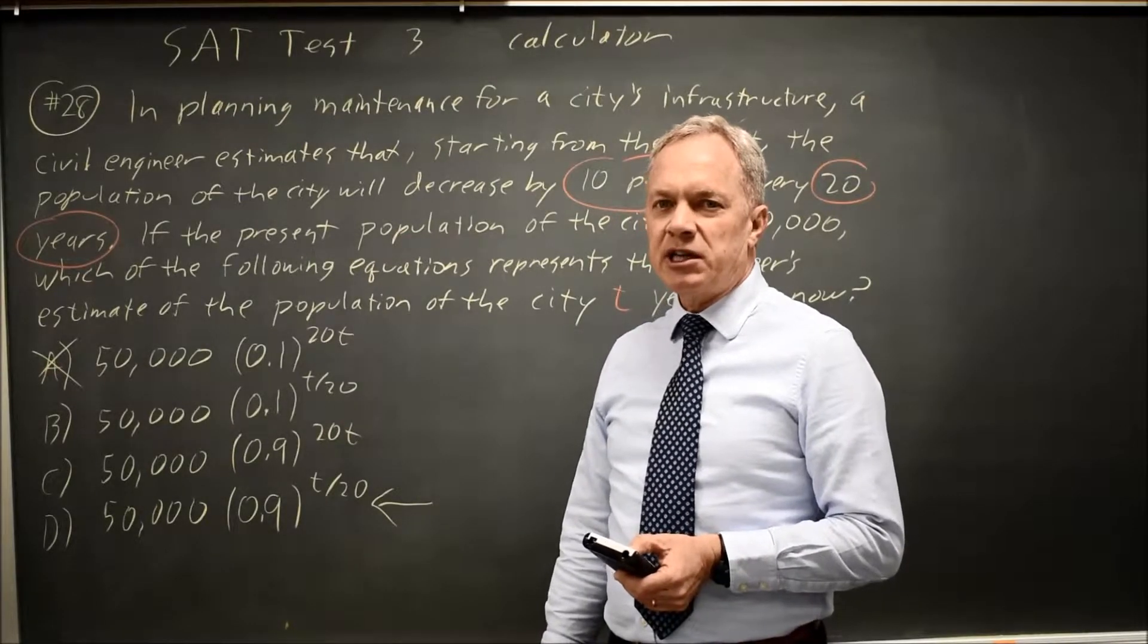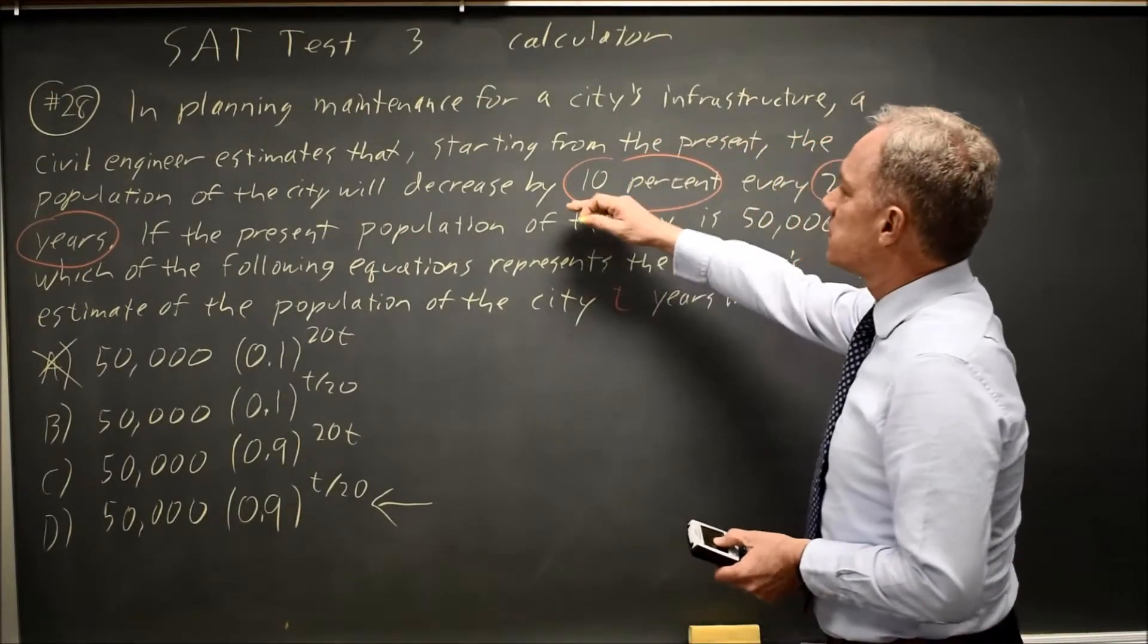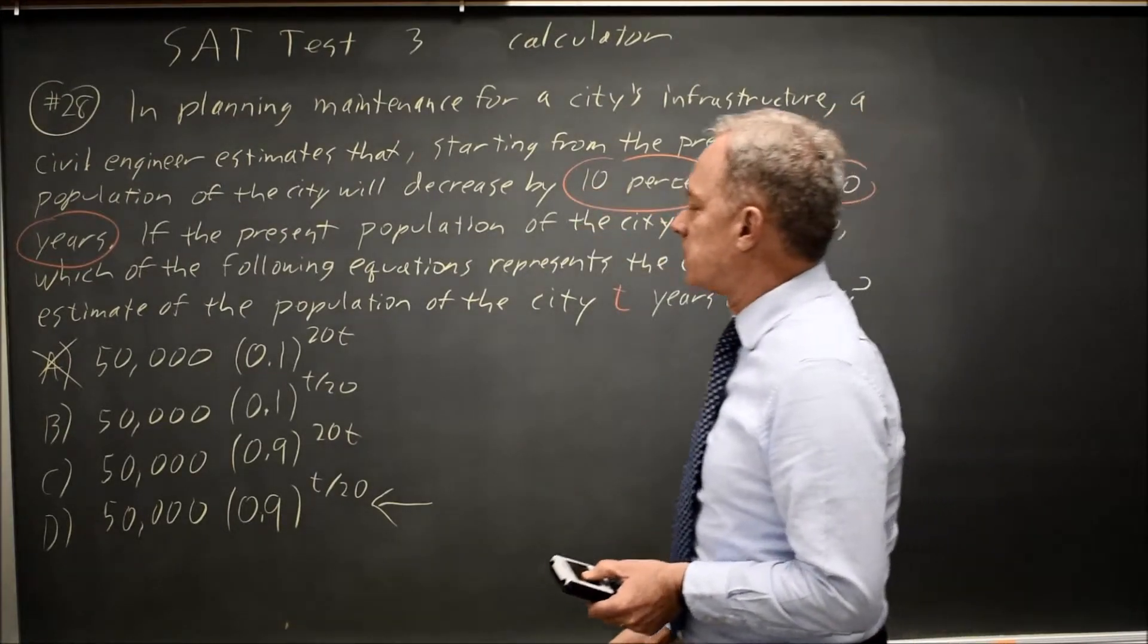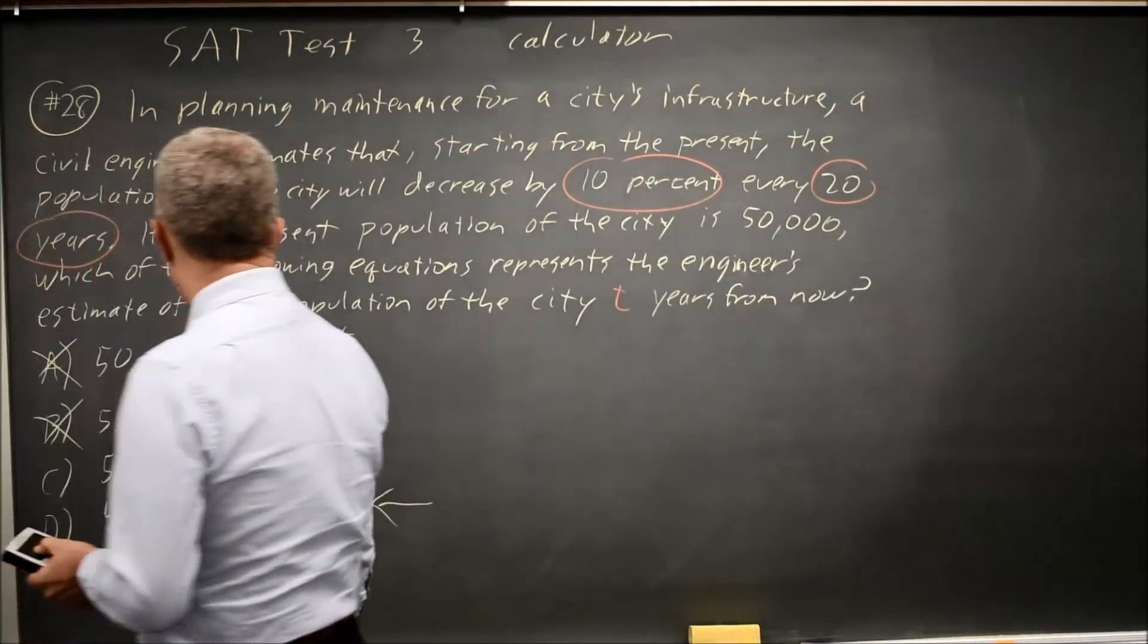So I've only retained 10%. I've lost 90%. This has decreased by 10%, so I should have 45,000 instead of only 5,000. So choice B is wrong.